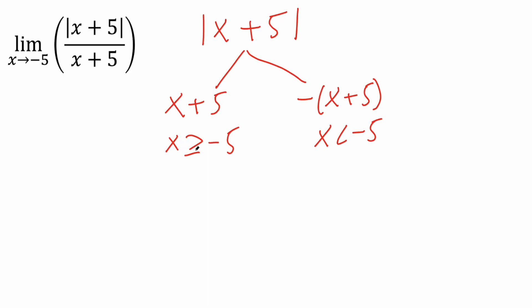When x is greater than or equal to negative 5, that could be negative 4, it could be 10, it could be whatever. So let's try 0. Because 0 is bigger than negative 5. 0 plus 5 is 5. 0 plus 5 is 5. They're a match.